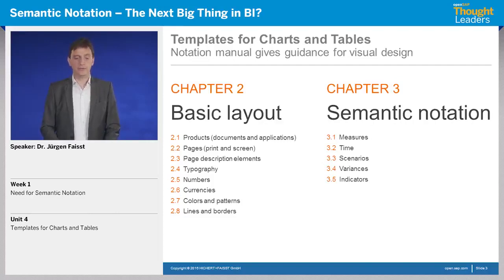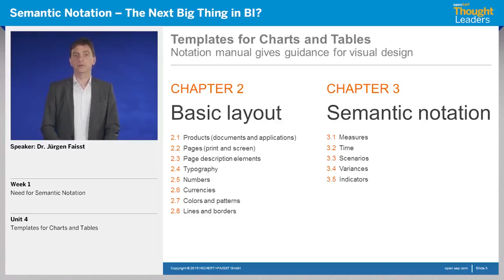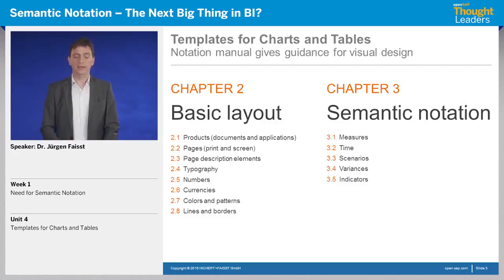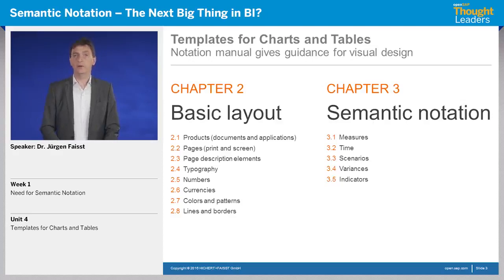In this unit, we will apply this semantic notation — this notation manual — to specific chart types and table types. We start from charts, let's say a column chart, how it looks today, and then we try to change the layout in order to be compliant with the rule set that we've introduced in the units before.